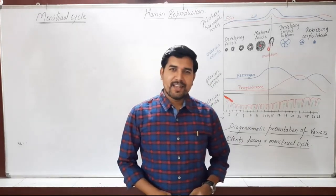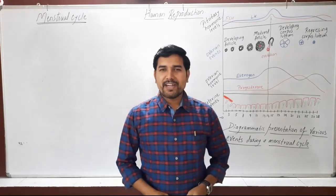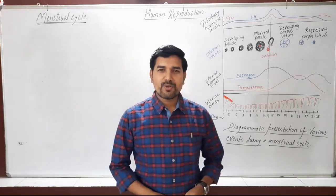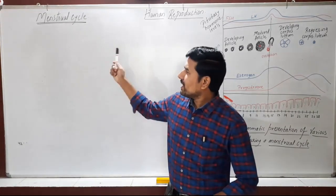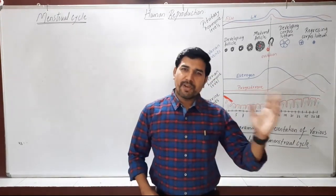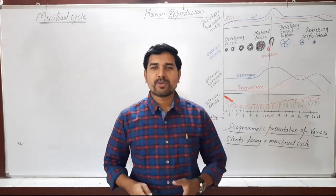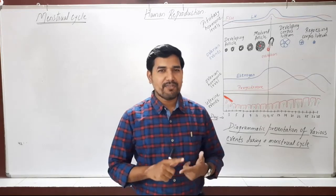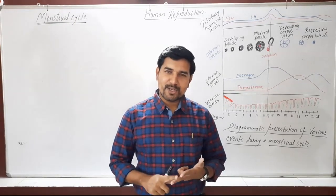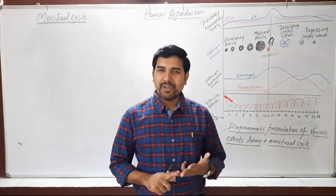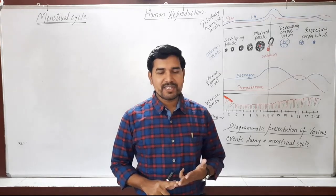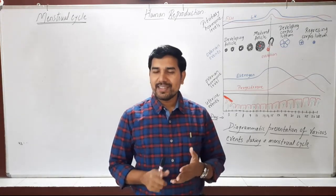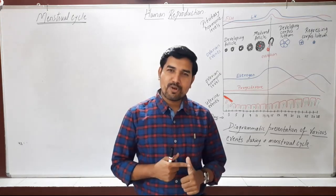Hello, dear student friends. We are continuing with the next part of human reproduction. In this class we are going to study the menstrual cycle. In the previous parts we covered the male reproductive system, female reproductive system, structure of the mammary gland, gametogenesis, which is divided into spermatogenesis and oogenesis, and the structure of the sperm.